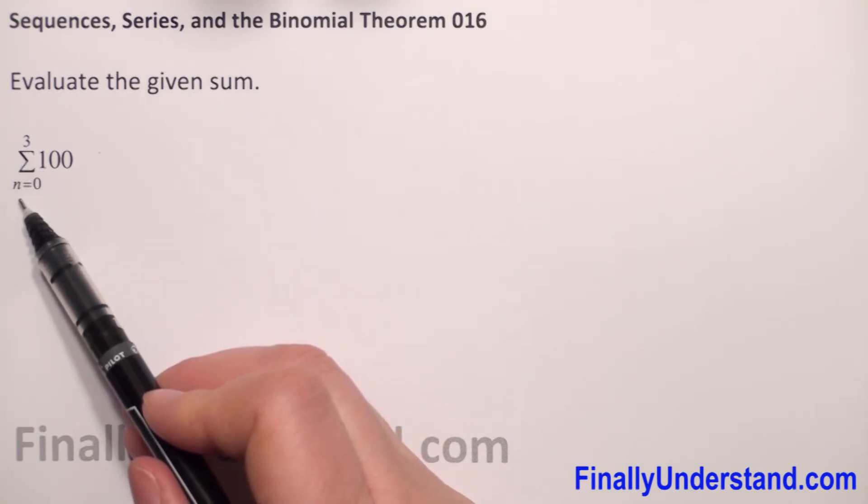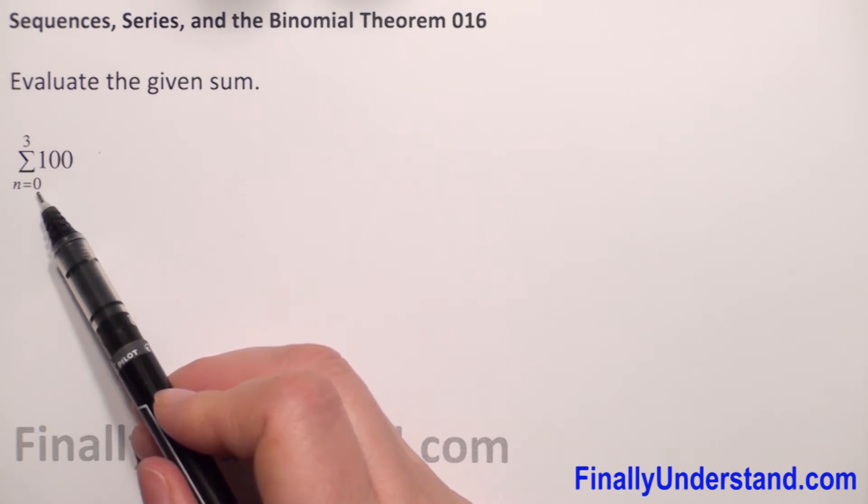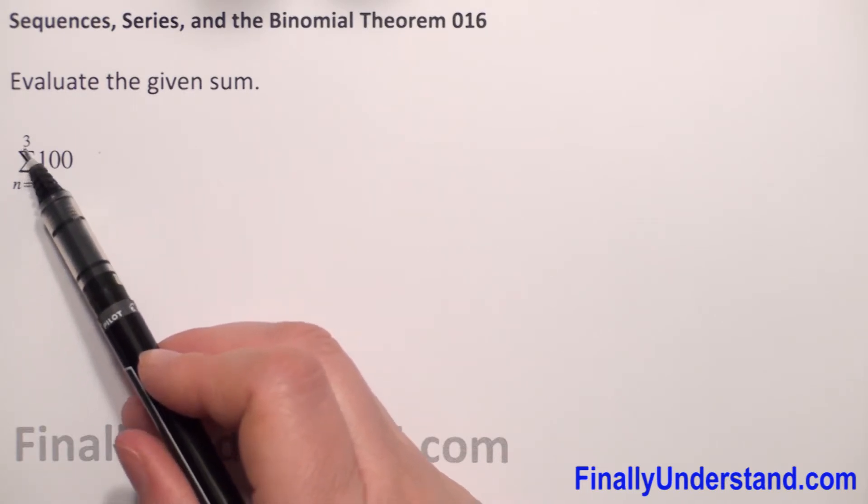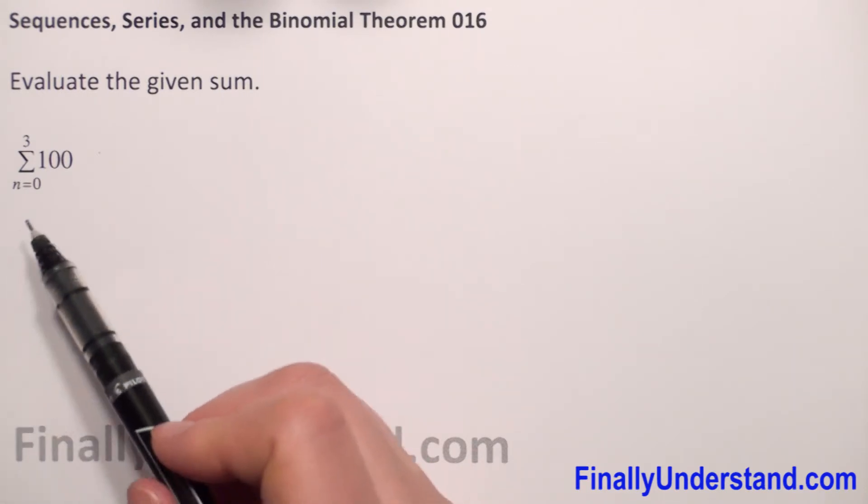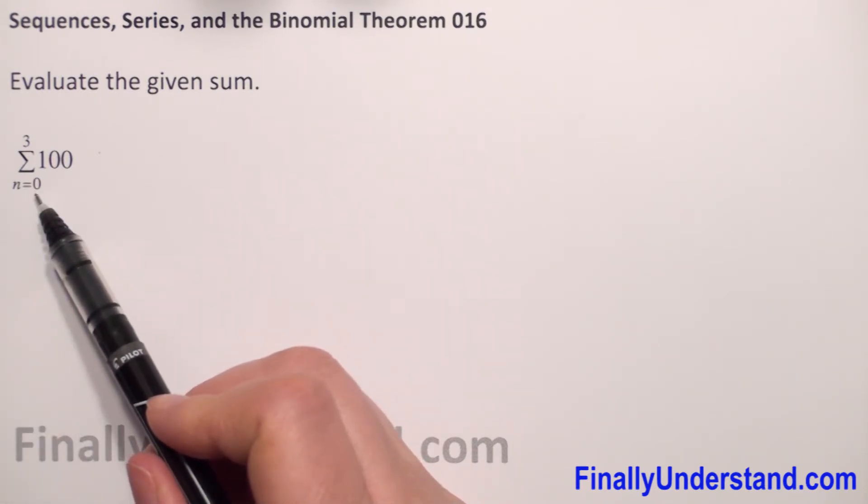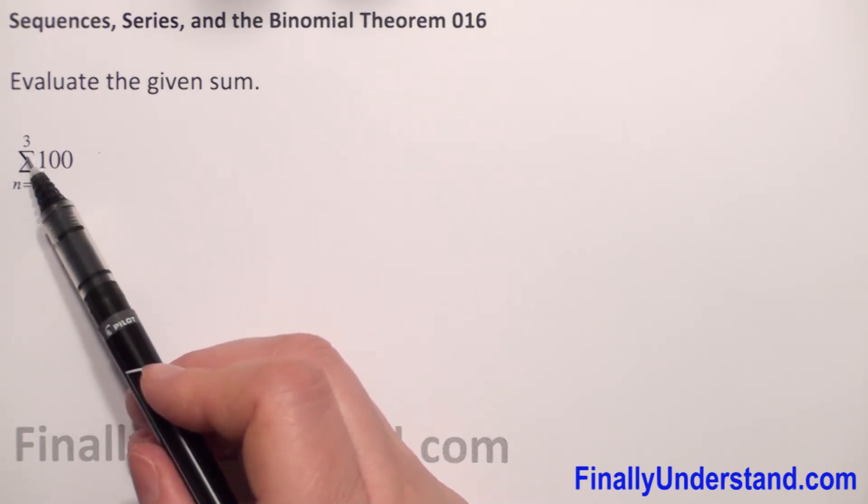The letter n is called the index of summation. The numbers 0 and 3 are called the limits of summation. 0 is the lower limit and 3 is the upper limit.